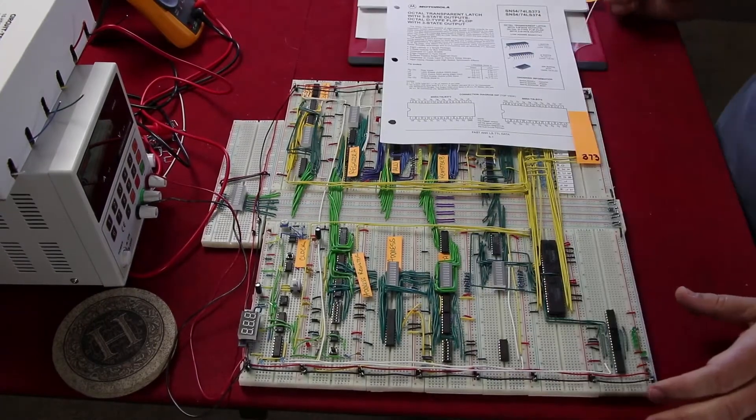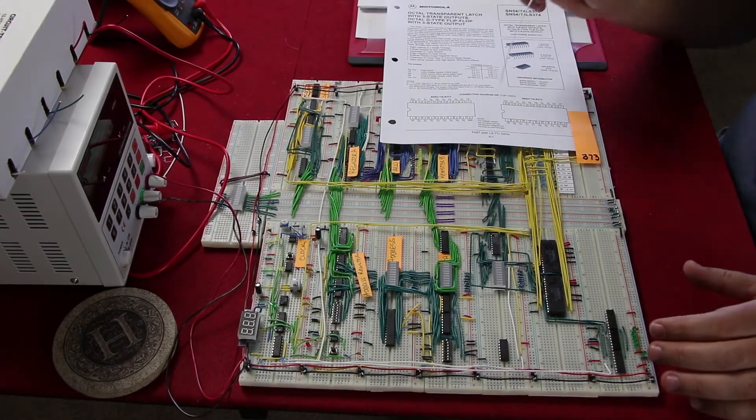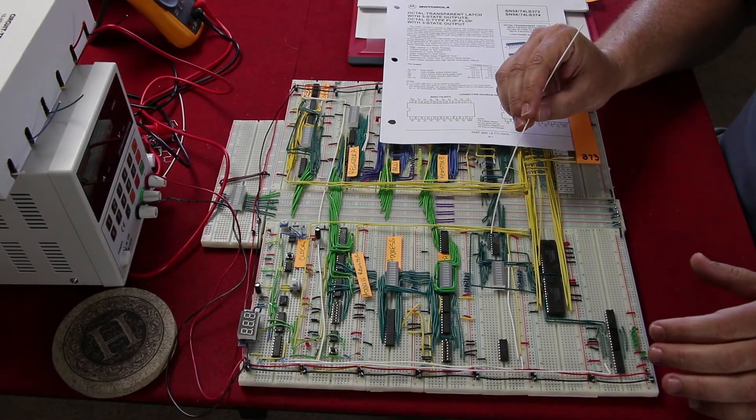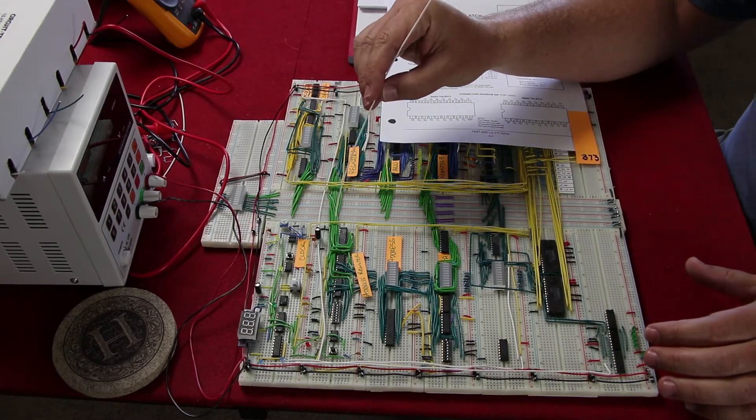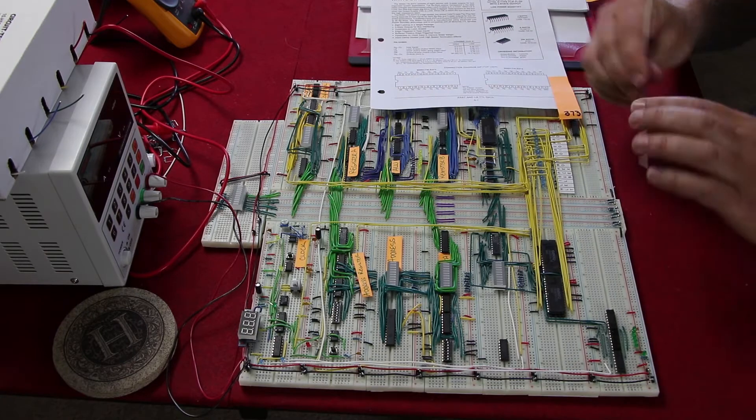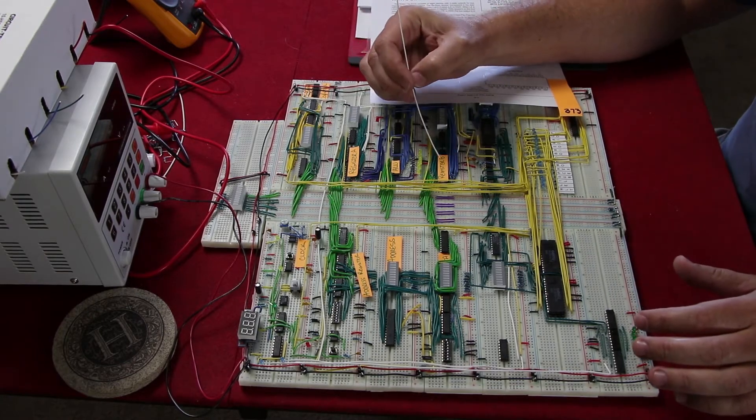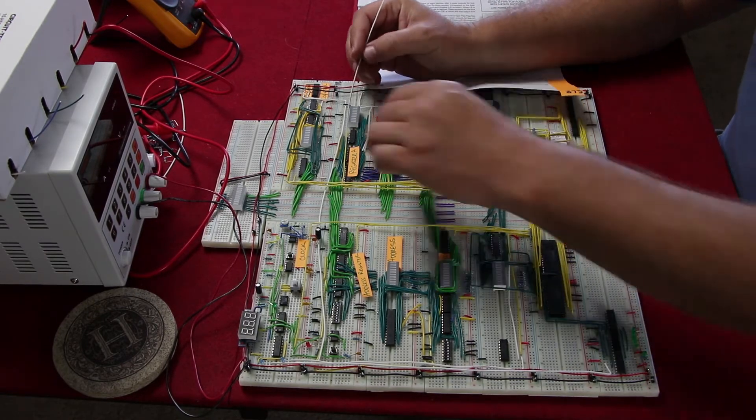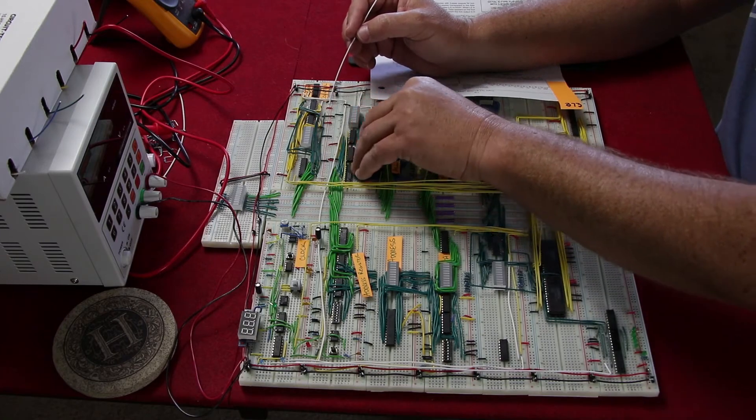All right, hi guys, this will be my second video and I'm gonna go over the 373 chip. This is slightly different than the register A or register B chips which are using the 245 and then the two individual chips that store the information, a low chip and a high chip.